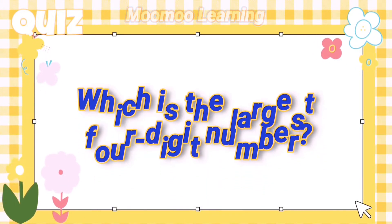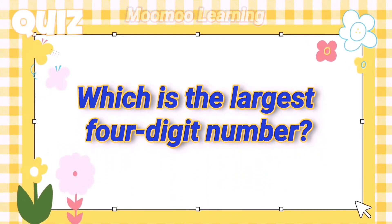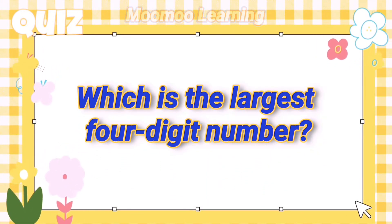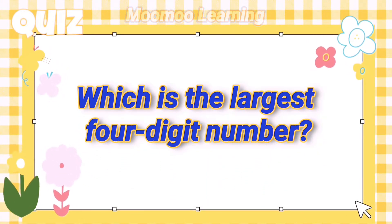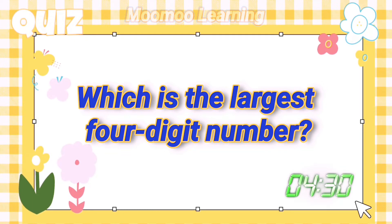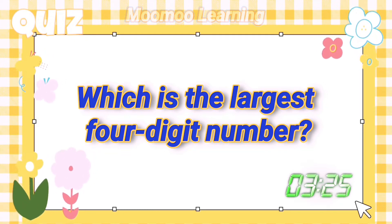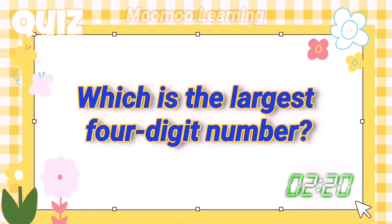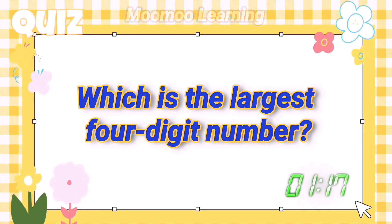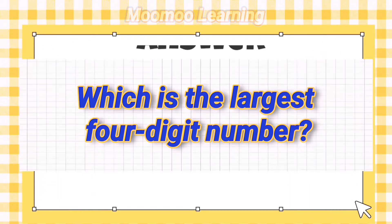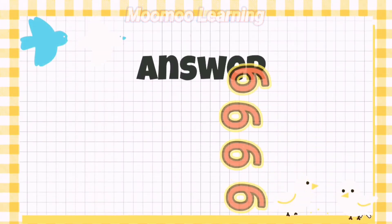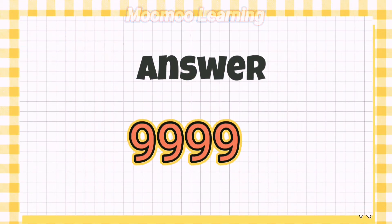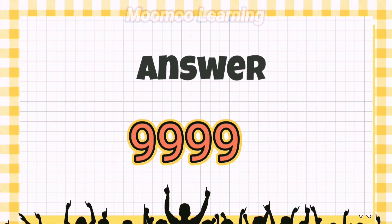Which is the largest four-digit number? Answer: 9999.